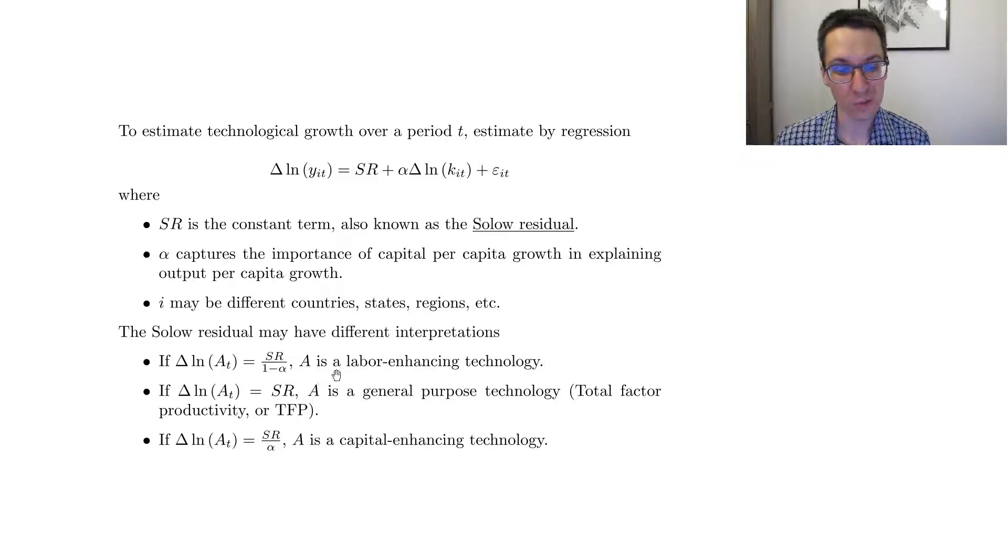If I don't assume this, if I assume that it's a general-purpose technology, or what we call total factor productivity, or TFP, then I just leave it as it is, and may take an exponent then to go back to my original Cobb-Douglas. And if I assume a capital-enhancing technology, so I divide it by alpha.